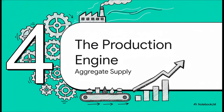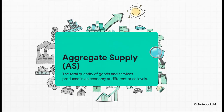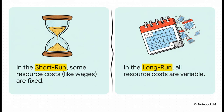Section four: the production engine. So that's the demand side of the economy — all the spending that's happening. But of course, for people to spend money on stuff, someone has to be making that stuff. And that brings us to the other half of our map: aggregate supply. Aggregate supply is basically the grand total of all the goods and services that every single business in a country is able to produce. This is shaped by things like our level of technology, how many workers we have, and the cost of raw materials. Now, here's a really crucial distinction: time. In the short run, some costs for businesses — like employee wages set by a contract — are kind of sticky and don't change very fast. But in the long run, everything is up for grabs. Contracts can be rewritten, and the economy can fully adjust to its potential.